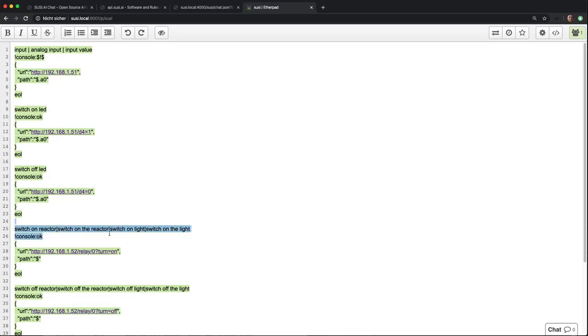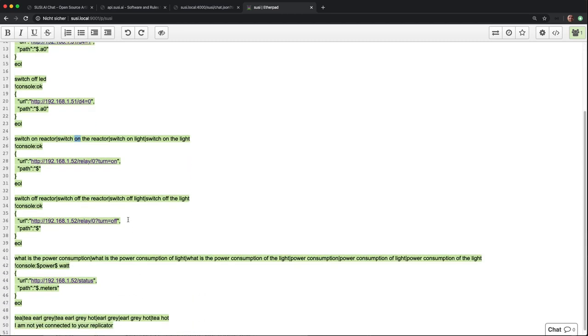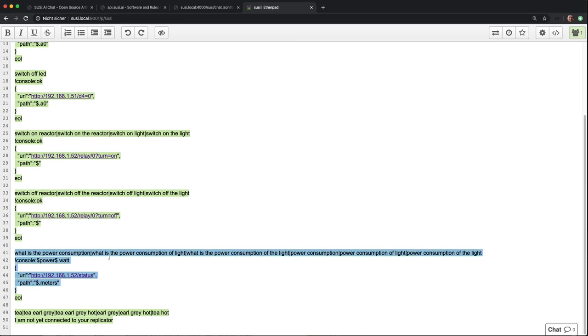Right here you see the example how to program the Shelly switch. The Shelly switch has this API and these are the commands to switch on the light. And these are the commands to switch off the light. This is the skill which reads the power consumption of the light. And it gives you through the status API the meters element in Watt. And so you can speak out how much power your device is consuming.